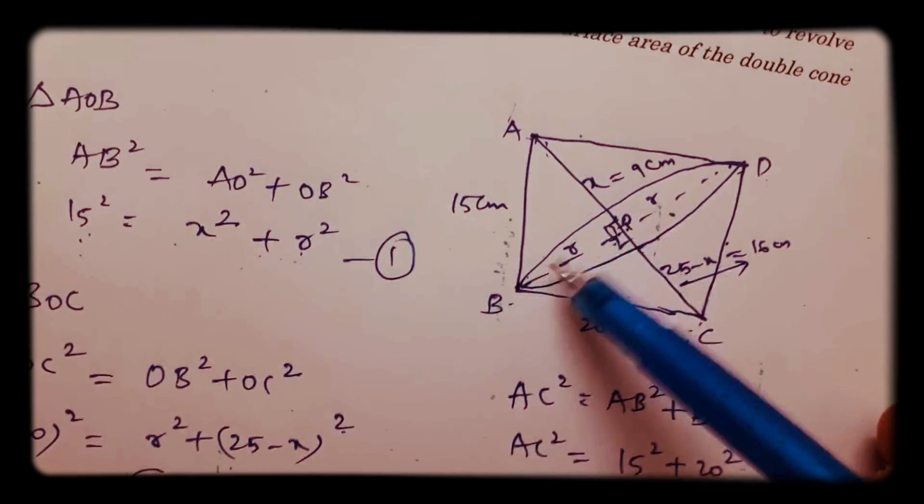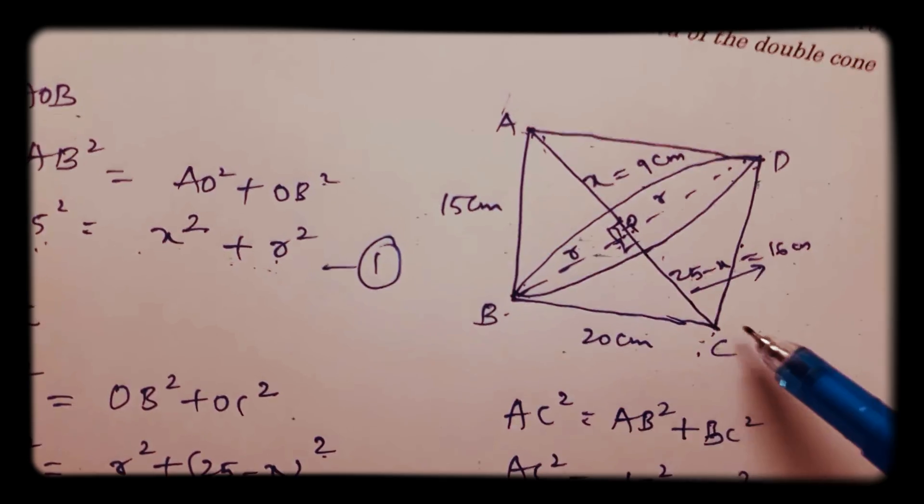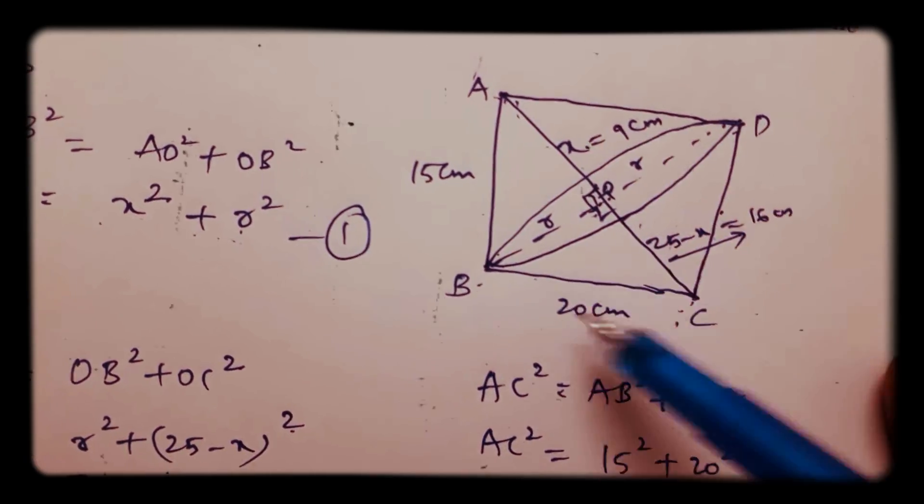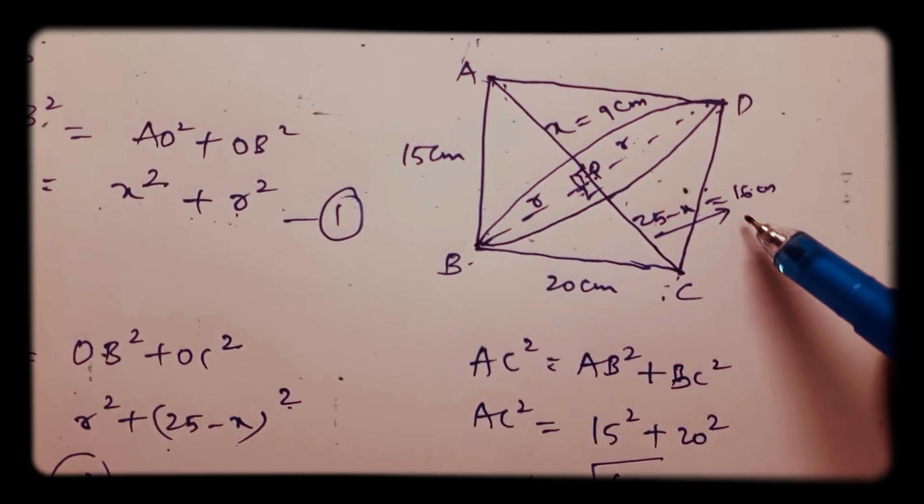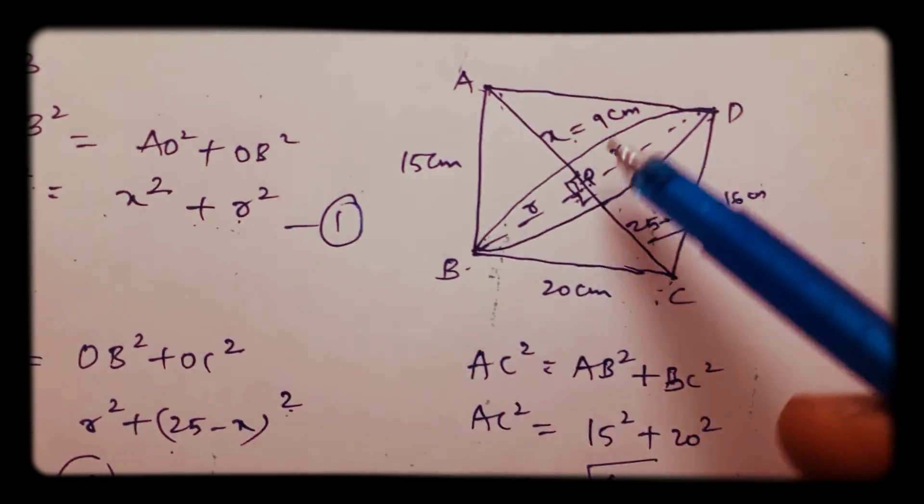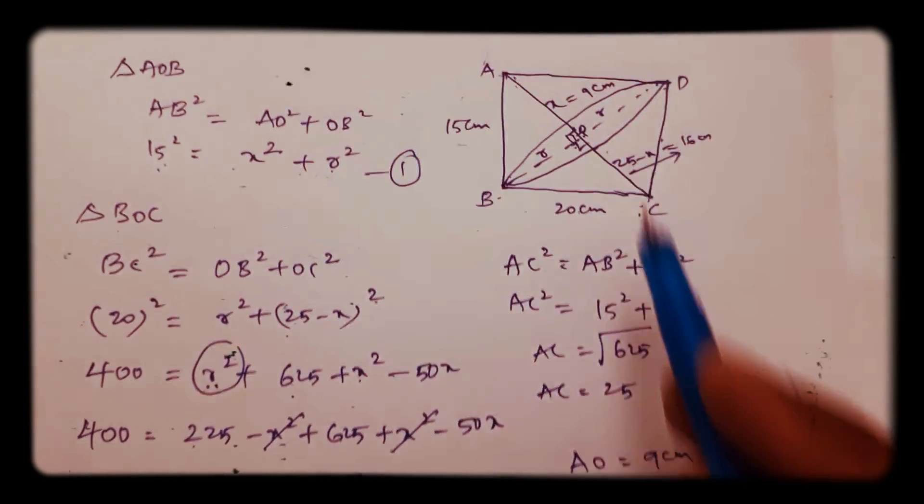Now AO is the height of the top cone, that is 9 centimeters, and CO is the height of the bottom cone. Here double cone, top and bottom, 16 centimeters. AO is 9, CO is 16. Now these two are the heights of the cones.